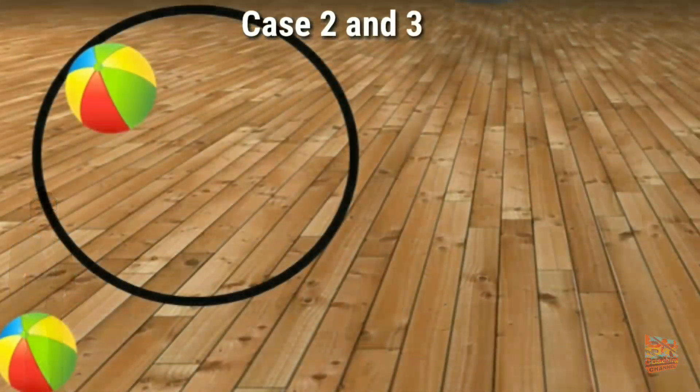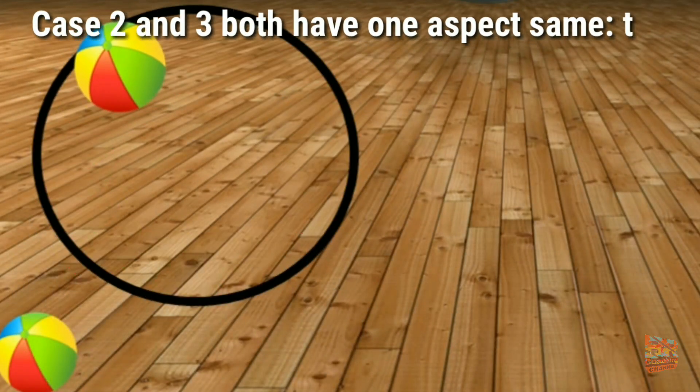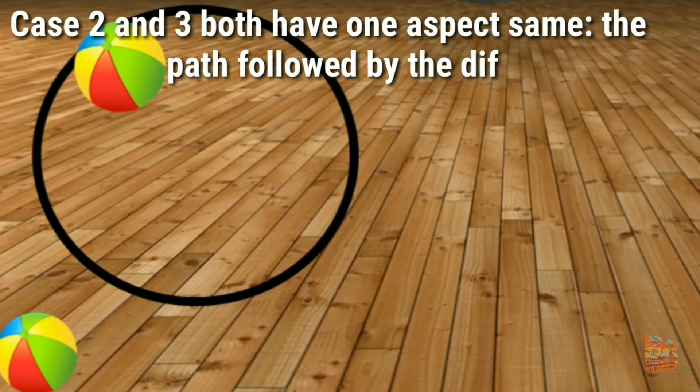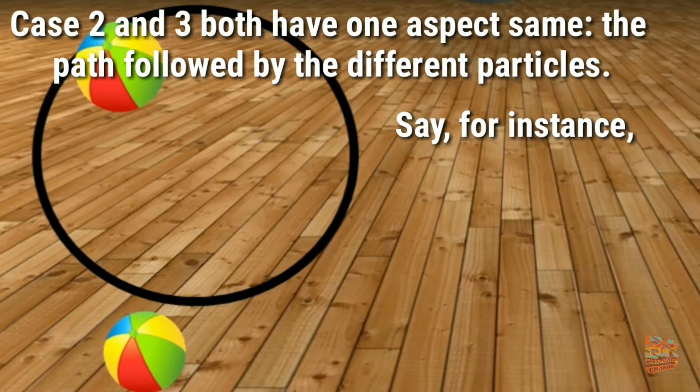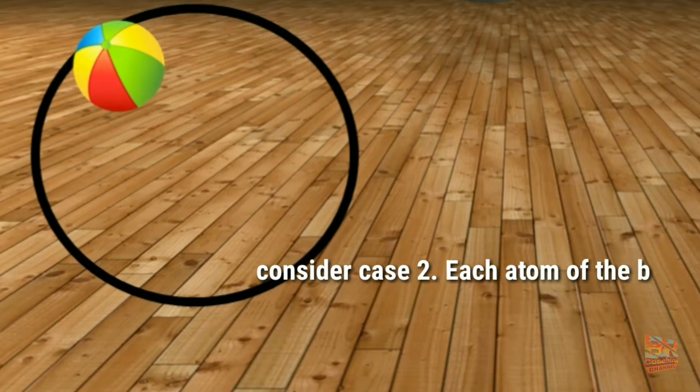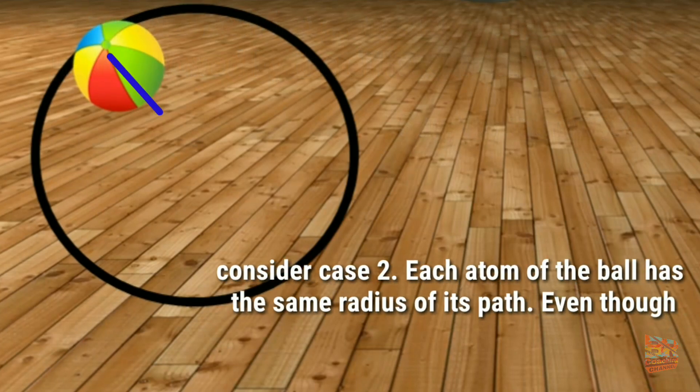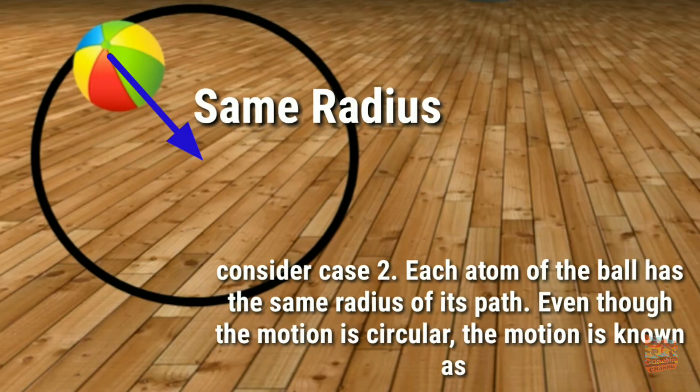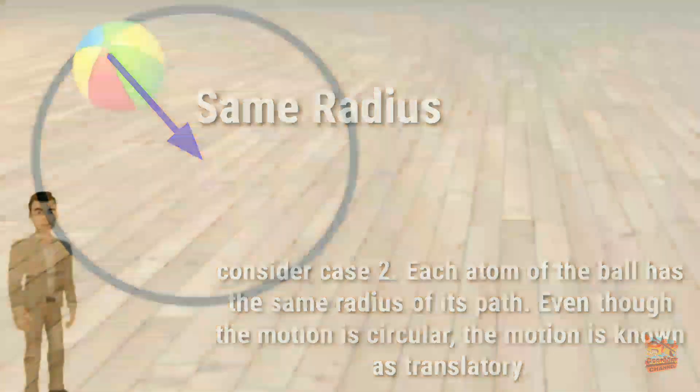Case 2 and 3 both have one aspect same: the path followed by the different particles. Say, for instance, consider case 2. Each atom of the ball has the same radius of its path. Even though the motion is circular, the motion is known as translational.